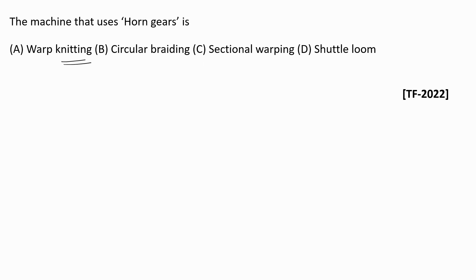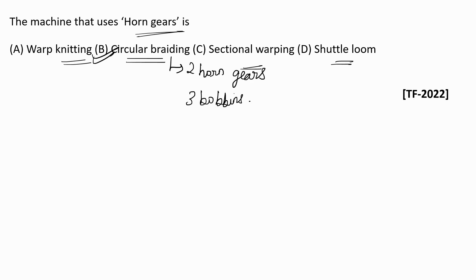Next question: the machine that uses horn gears is? Options are warp knitting, circular braiding, sectional warping, and shuttle loom. Horn gears are used in the circular braiding machine. The horn gear is a part of the circular braiding machine, which consists of two horn gears and three bobbins. You should also remember the parts, functions, and process parameters of each machine, as deep-level understanding is required for GATE Textiles questions.